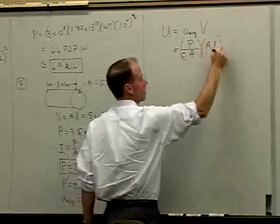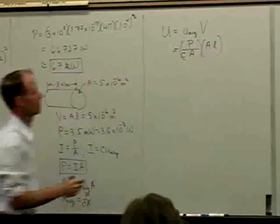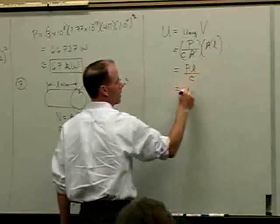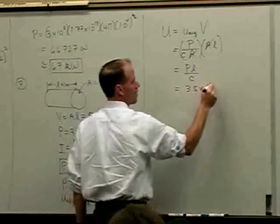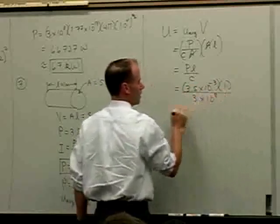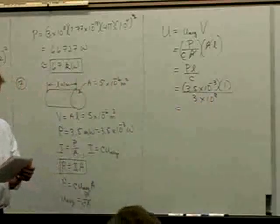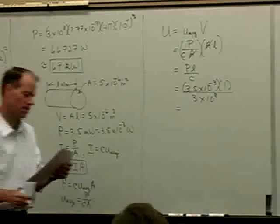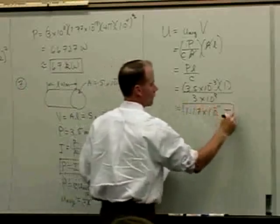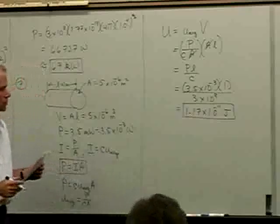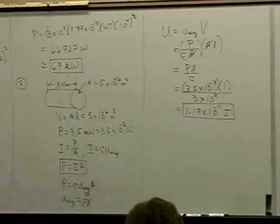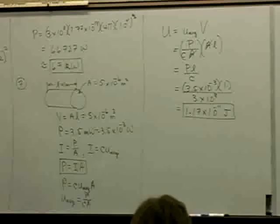The energy equals power times length divided by the speed of light: 3.5 times 10 to the minus 3 watts times 1 meter, divided by 3 times 10 to the 8 meters per second. That gives 1.17 times 10 to the minus 11 joules — that is the energy contained in 1 meter of a 3.5 milliwatt helium-neon laser beam.